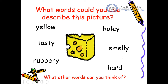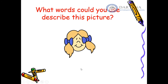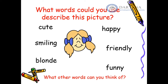The cheese smells smelly — it has a certain smell — and it feels hard. We can also say it is yummy. Now what about this girl? We can say she is cute, smiling, blonde — she has blonde hair — she looks happy, she feels friendly, and she is funny. All these words used to describe the girl are called adjectives.